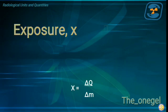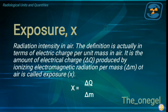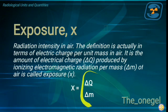Exposure is symbolized by the small letter X. When we say exposure, this is radiation intensity in air — without any interaction with the patient yet. Exposure is defined in terms of electric charge per unit mass in air. It is the amount of electric charge, delta Q, produced by ionizing electromagnetic radiation per mass, delta M, of air. This is called exposure, and we have the formula: delta Q over delta M.